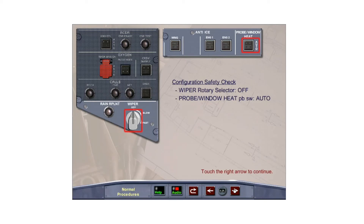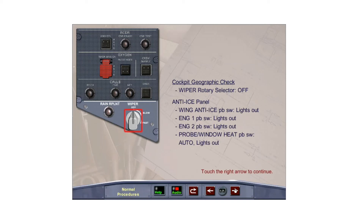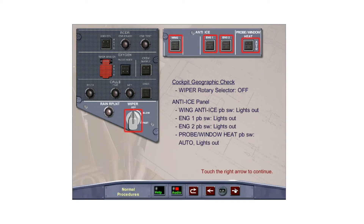During the cockpit preflight check, confirm that the wiper rotary selector is in the off position and the probe window heat push-button switch is in the auto lights-out position. On the anti-ice panel, check that the wing anti-ice and the Engine 1 and Engine 2 push-button switches are in their normal off lights-out position. Next, check that the probe window heat push-button switch is in the auto lights-out position.